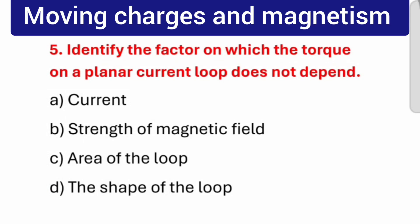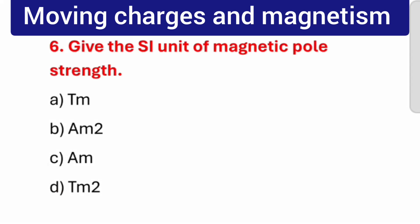Question number 5: Identify the factor on which the torque on a planar current loop does not depend. The correct answer is the shape of the loop. Question number 6: Give the SI unit of magnetic pole strength. The correct answer is AM.